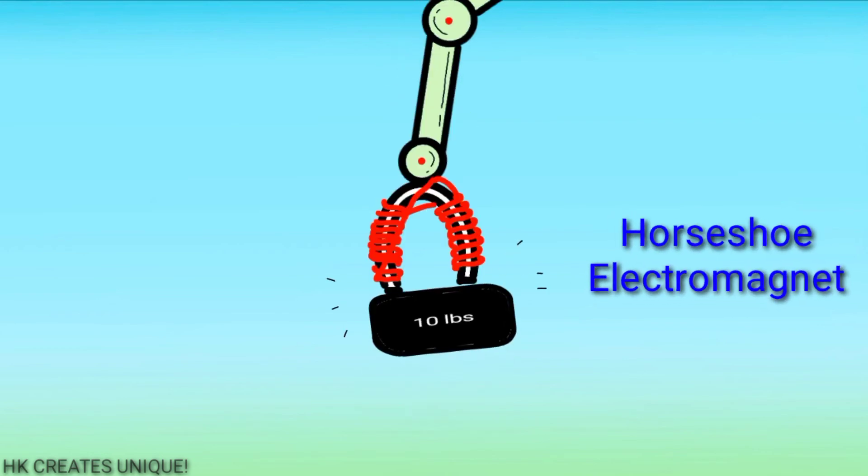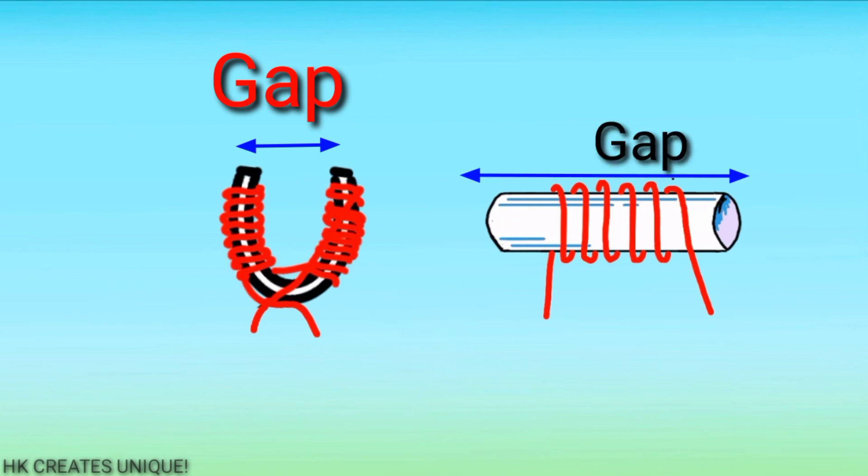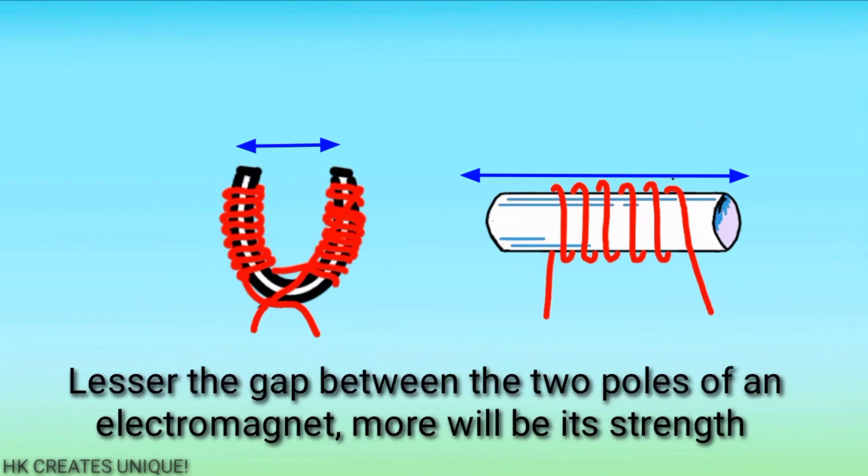Do you know why horseshoe type electromagnets are used for lifting weights? It is because it has more strength compared to a standard electromagnet. The gap between two poles of a horseshoe type electromagnet is smaller than that of a standard electromagnet. Therefore, lesser the gap between two poles of an electromagnet, more will be its strength.